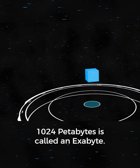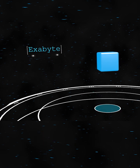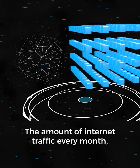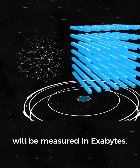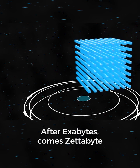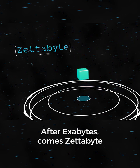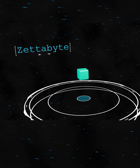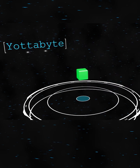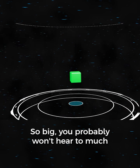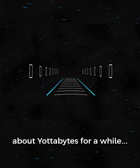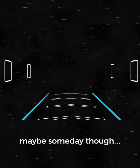1024 petabytes is called an exabyte. The amount of internet traffic every month will be measured in exabytes. After exabytes comes zettabyte, and then yottabyte. So big you probably won't hear too much about yottabytes for a while — maybe someday though.